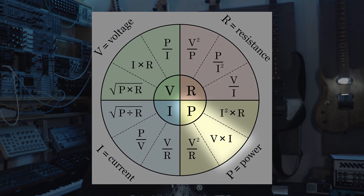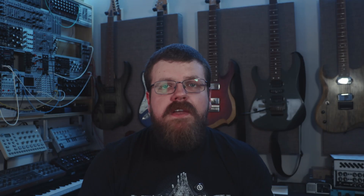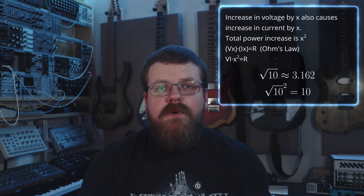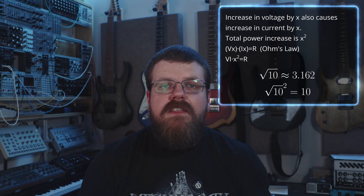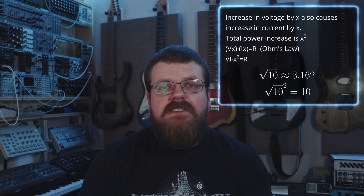The decibel defines an increase in power, and for electric signals, power equals voltage times current. If we connect the signal to a linear load — such as a light bulb, a resistor, or a loudspeaker — increasing the voltage also increases the current. So for a ten decibel increase in power, we need to increase the voltage by roughly 3.162 times. Since this causes a current increase of an equal 3.162 times, the total power increase is 3.162 squared, which equals ten.